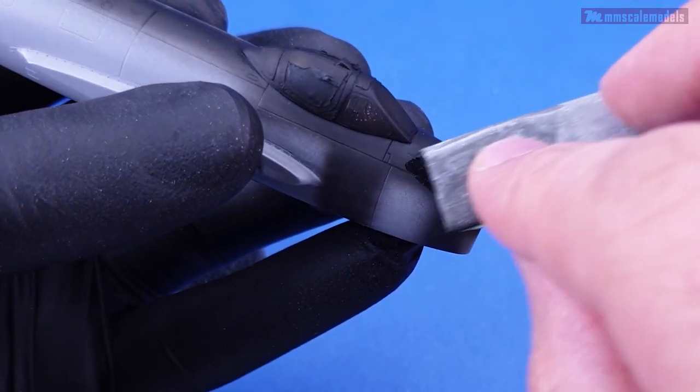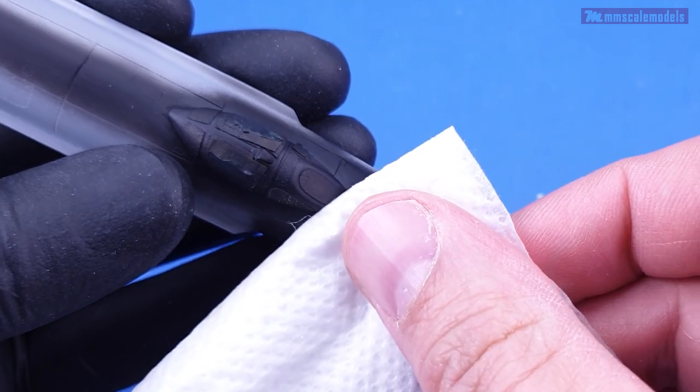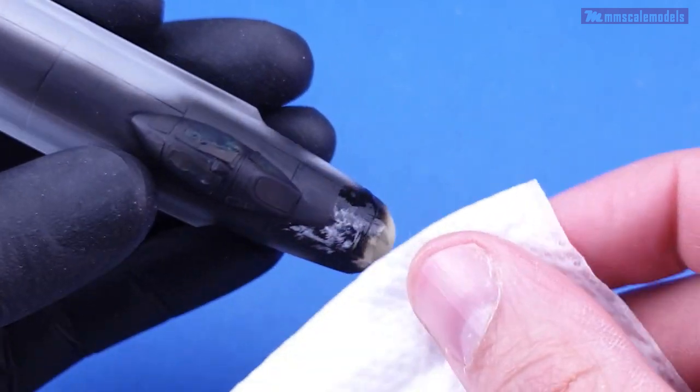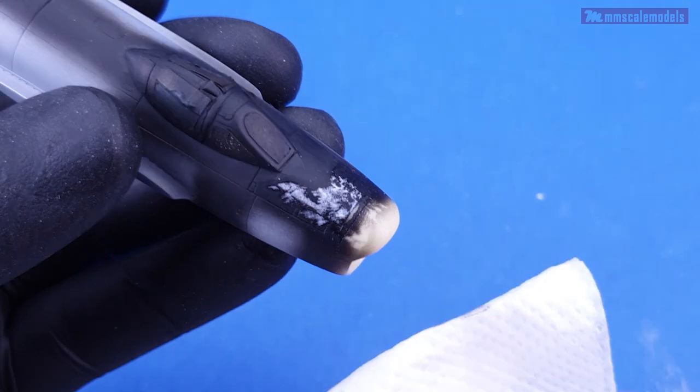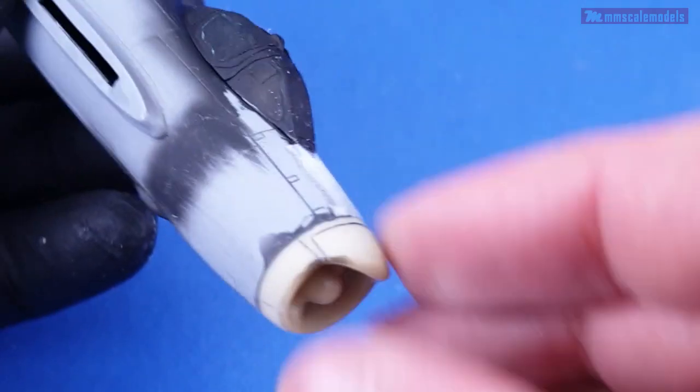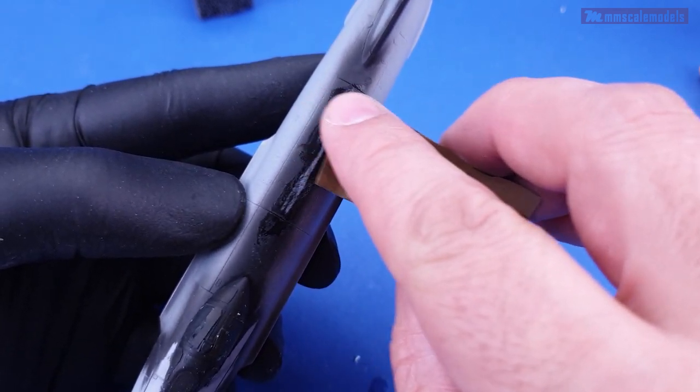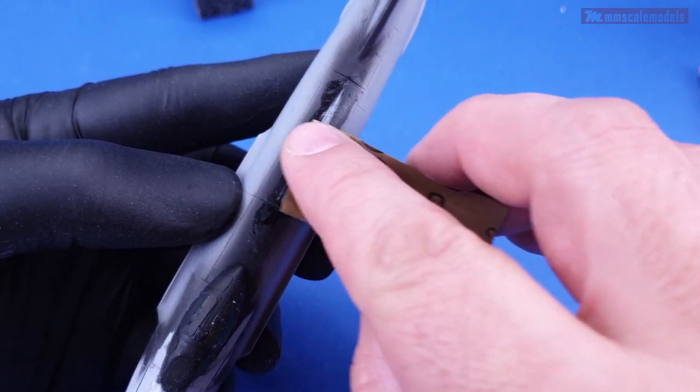As a rule when I use guide coat I sand it down completely from the whole surface. Then if something is left it needs filling and the process repeats itself until satisfactory results have been achieved. In this case I managed to sand enough material down to eliminate all low spots.